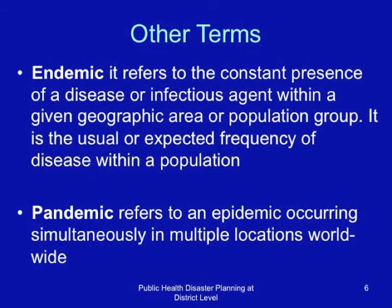Other terms related to epidemics: Endemic refers to the constant presence of a disease or infectious agent within a given geographic area or population group — it is the usual or expected frequency of disease in a population. Pandemic, on the other hand, refers to an epidemic occurring simultaneously in multiple locations worldwide.